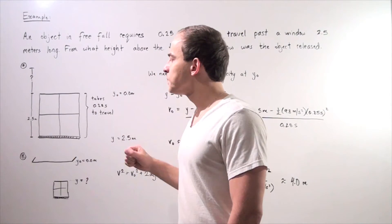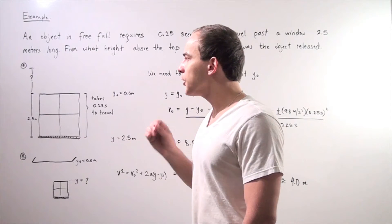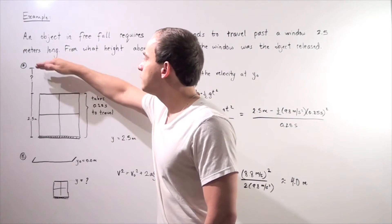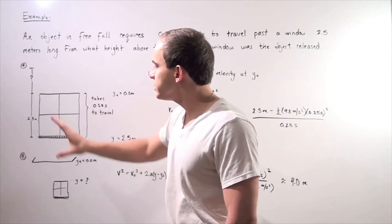So let's look at our diagram. In our diagram we have the window that is 2.5 meters long. We want to determine what the height is from where our ball was released. So this problem can be done in two steps.